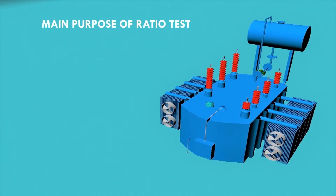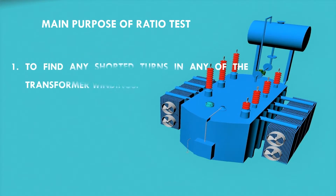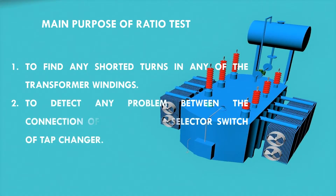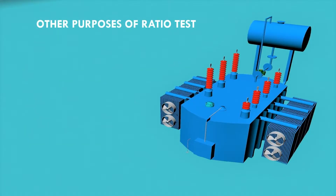The primary purpose of the ratio test is to find any shorted turns in any of the transformer windings due to insulation failure. It is also used to detect any problem between the connection of the winding and the selector switch of the tap changer. Other purposes include checking the polarity of a single-phase transformer.